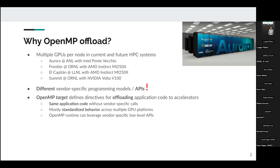Here comes OpenMP target, which has been in the OpenMP standard for several years. It defines directives for offloading application code to accelerators. With this we can achieve the same application code without vendor-specific calls, having a standardized behavior among different GPU platforms, although there are some implementation-defined behaviors. At the runtime level we can use the vendor-specific low-level APIs.